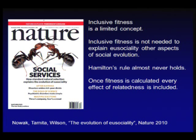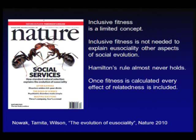We published a paper in Nature — with Corina Tarnita also joining us — which made the front cover, called The Evolution of Eusociality. In this paper, for the first time in 40 years, we rigorously analyzed inclusive fitness theory: what exactly is it, when can you use it, when can you not, and what do you gain from it? We also asked when Hamilton's rule works. And to my great surprise, the result was you don't need inclusive fitness to talk about the origin of social insects — fitness and natural selection is enough.